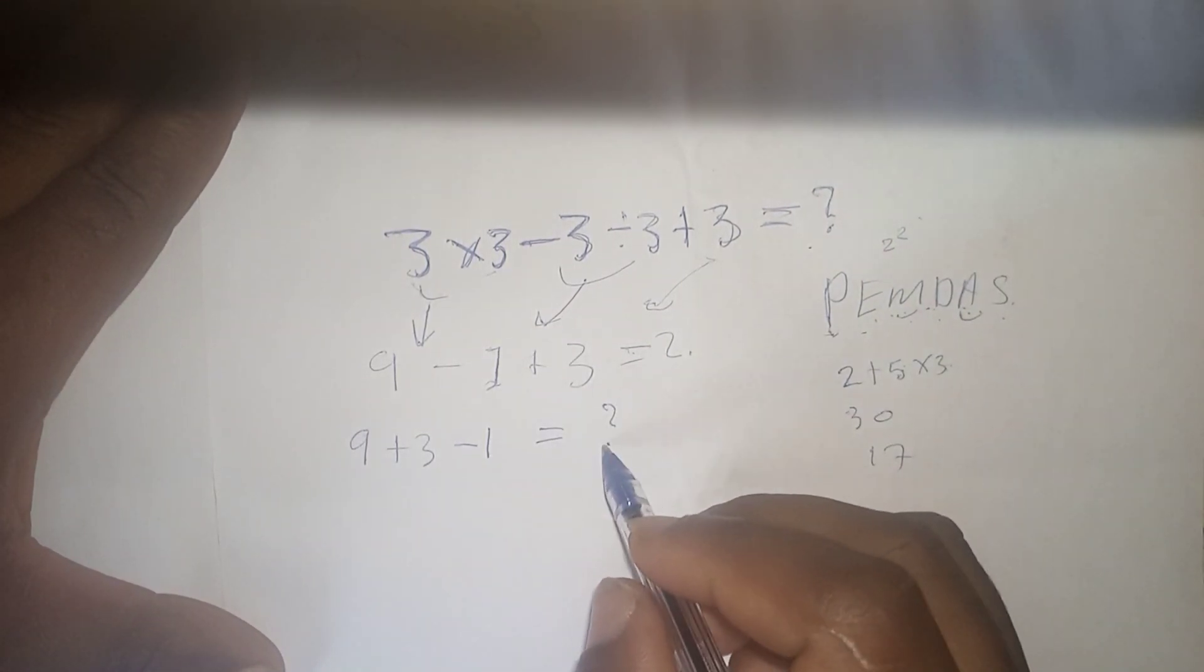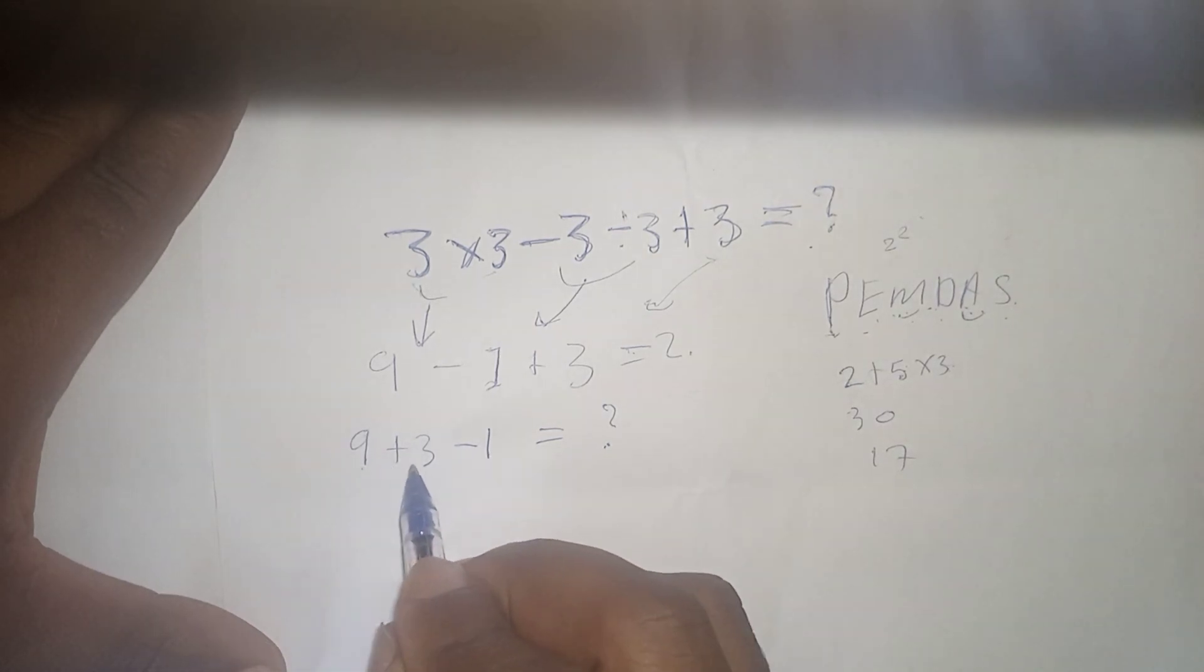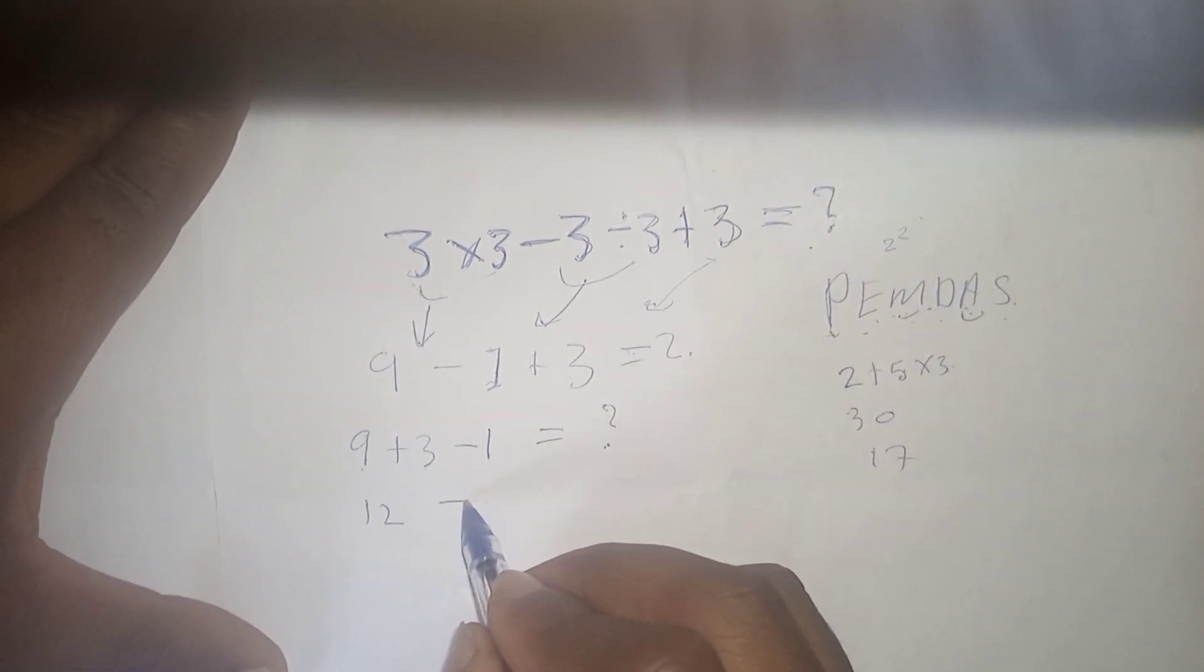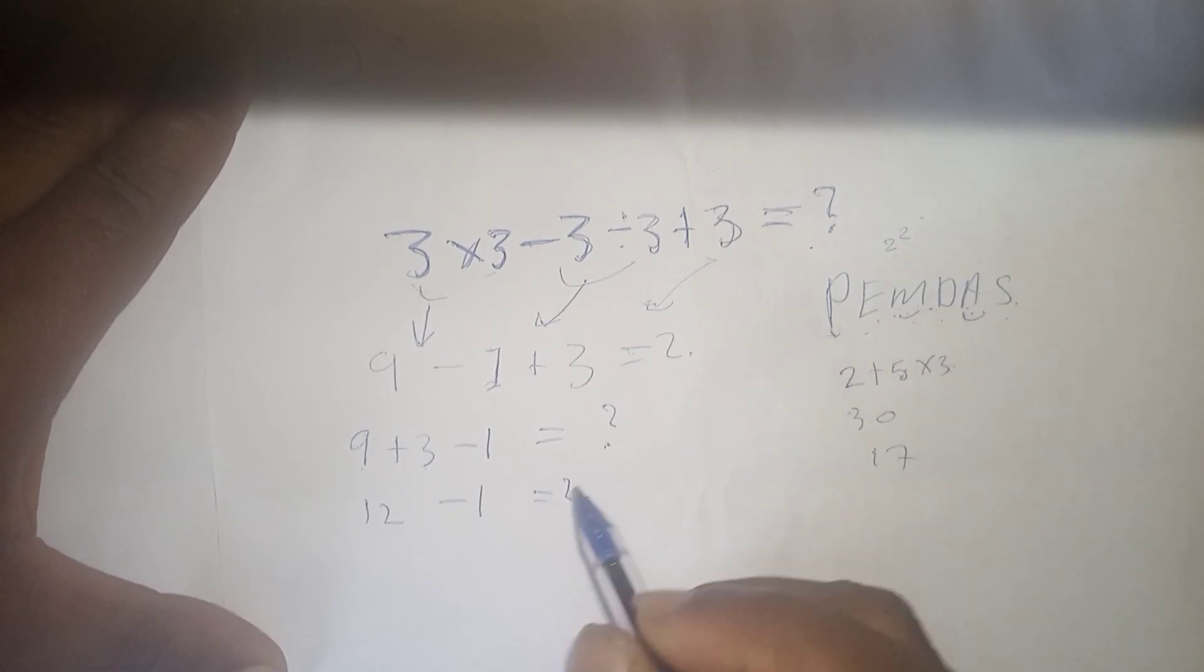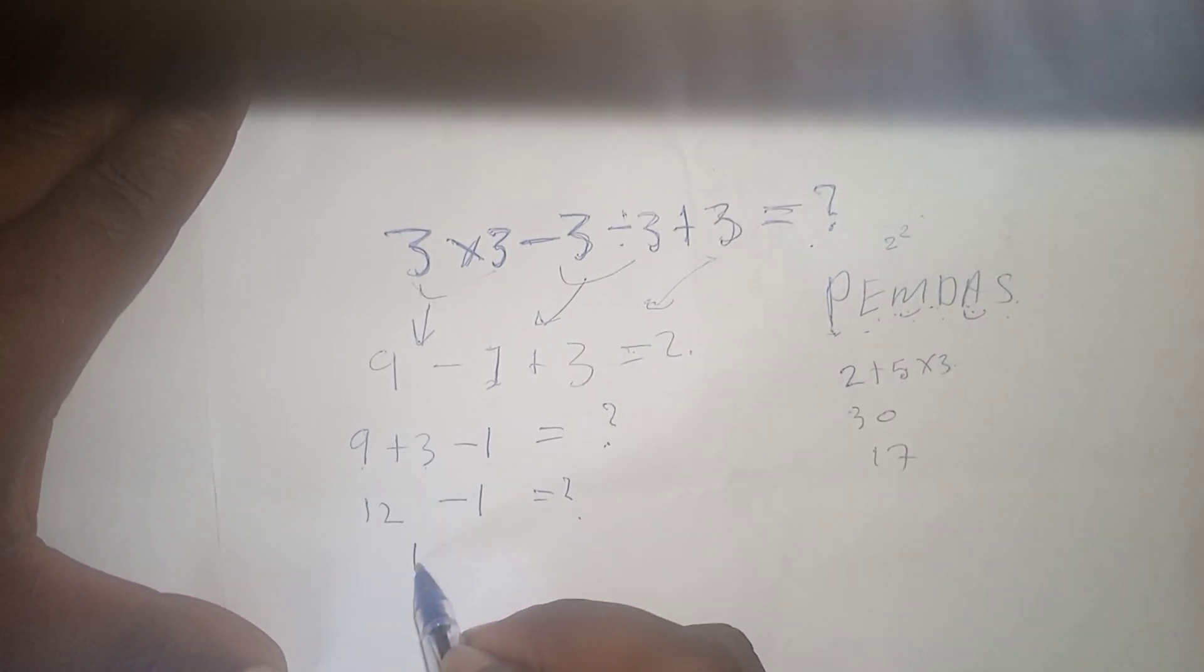So let's continue. If we take 9 plus 3, we will have 12 minus 1 equals. Then 12 minus 1 is simply 11.